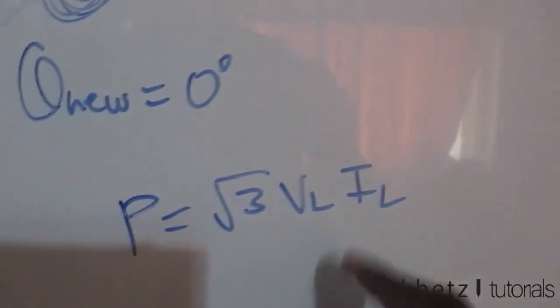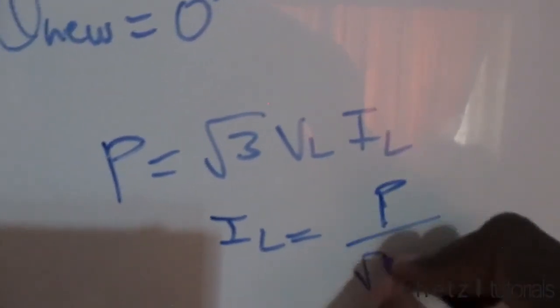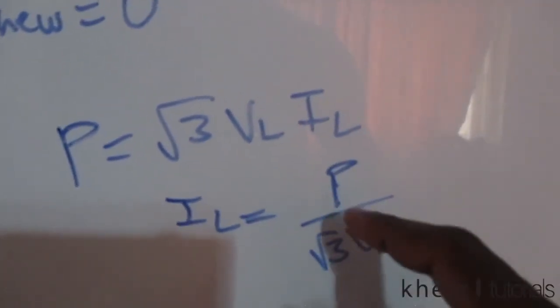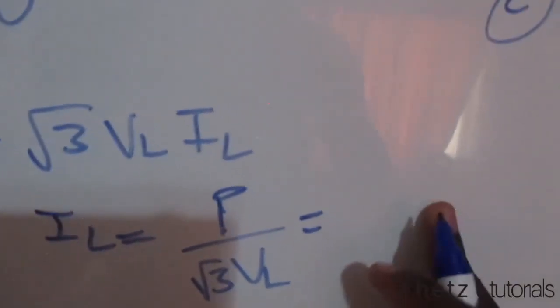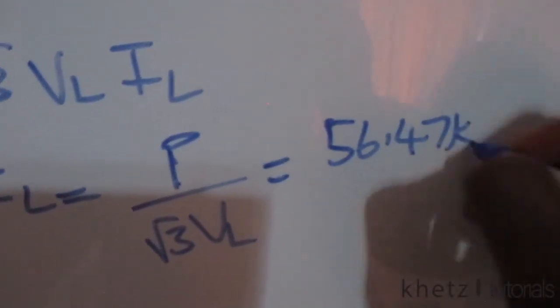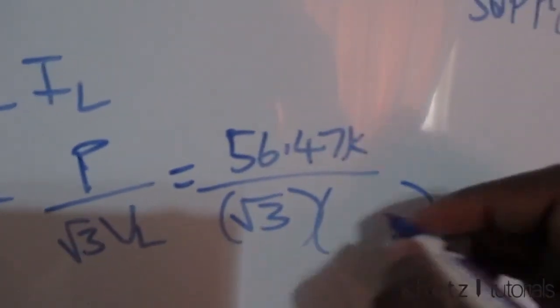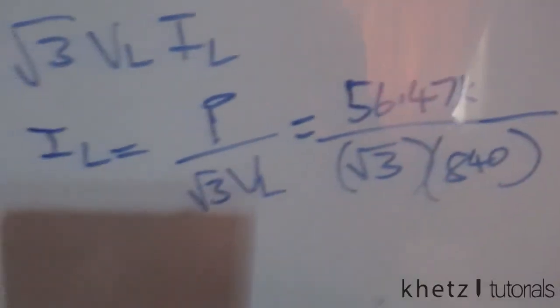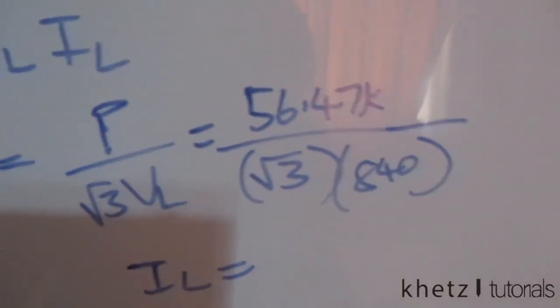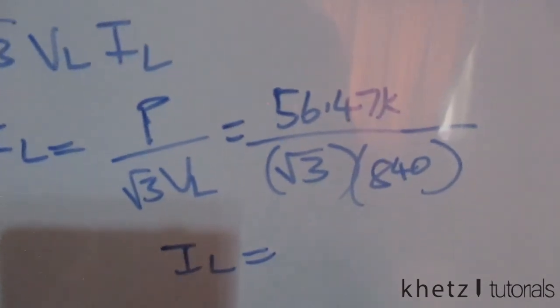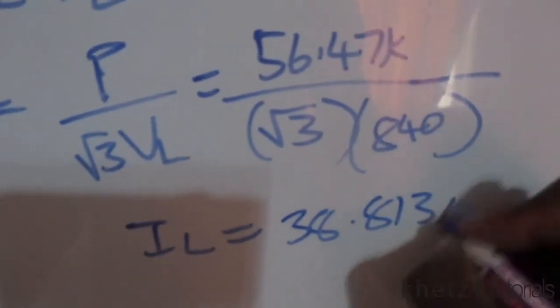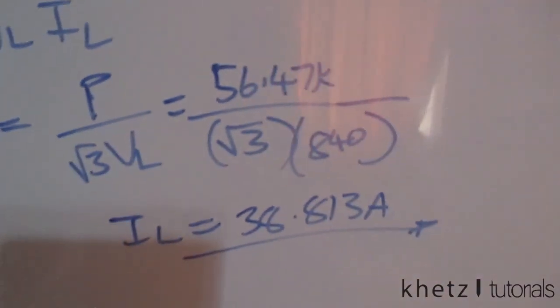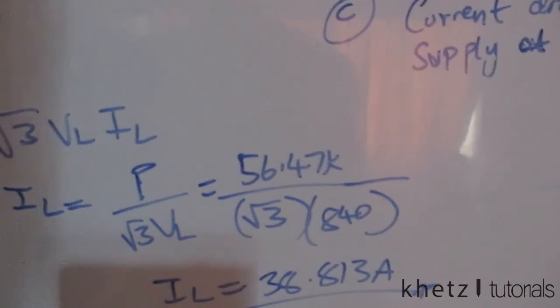Substituting the total average power of 56.47 kW divided by root three times 840 Vrms (the given line voltage), the line current drawn from the supply at unity power factor is 38.813 amperes. That covers all parts of this question. If you liked the video, please give it a thumbs up and subscribe.